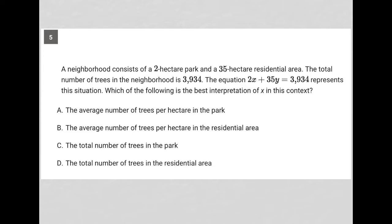This question says a neighborhood consists of a 2 hectare park and a 35 hectare residential area. So 2 is for the park and 35 is for the residential area. The total number of trees in the neighborhood is 3,934. The equation 2x plus 35y equals 3,934 represents this situation.